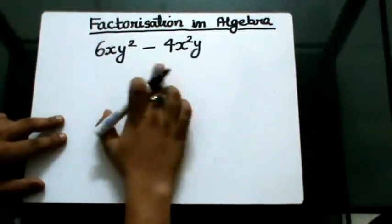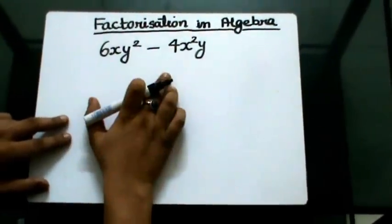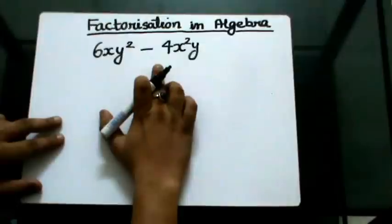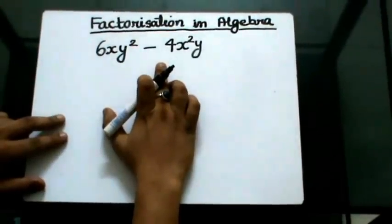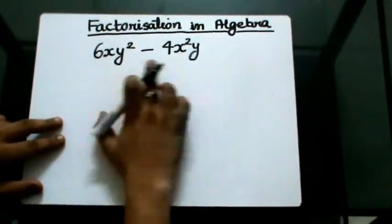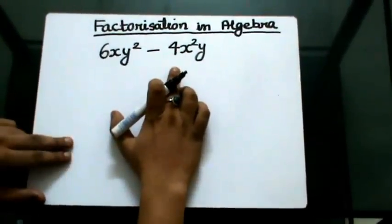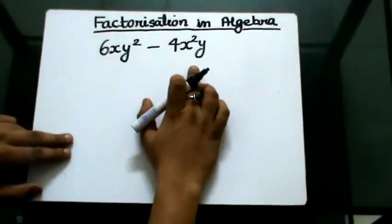Now both terms have some elements common in them. For example, 6 and 4 have 2 common, x² and x have x common, and y² and y have y common.